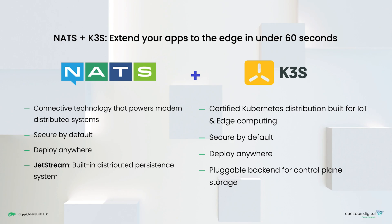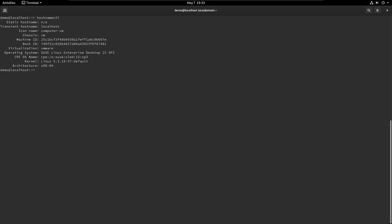With NATS and k3s you can extend your network to the edge in under 60 seconds, and now I will show you how you can do that. Let's start by installing k3s on SUSE Linux Enterprise.